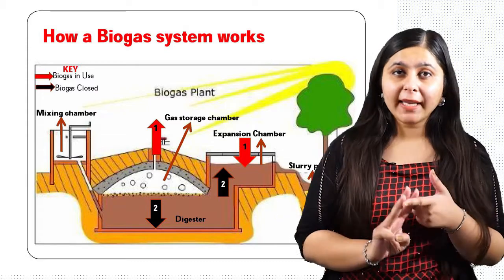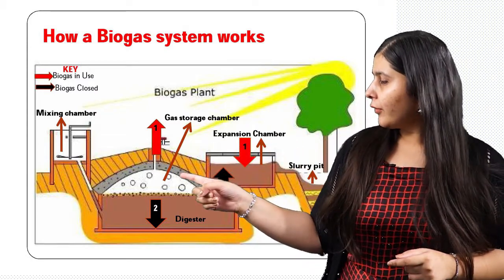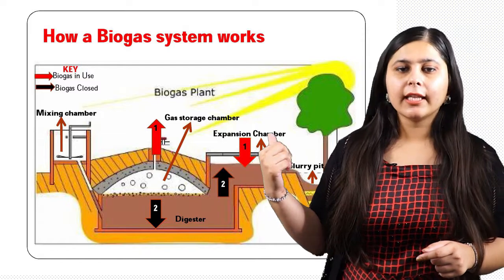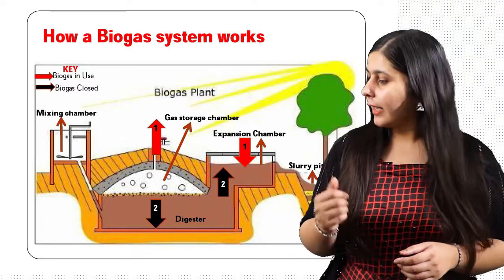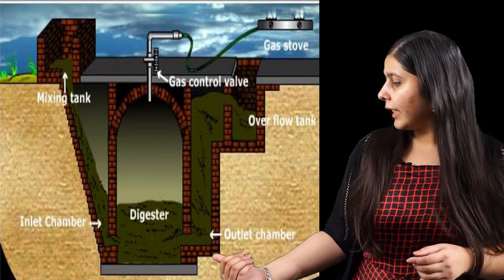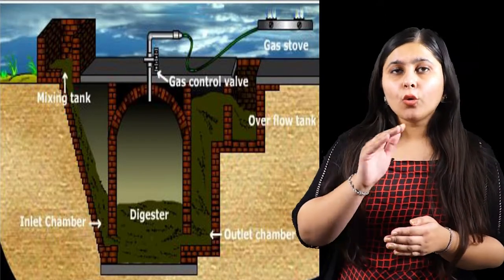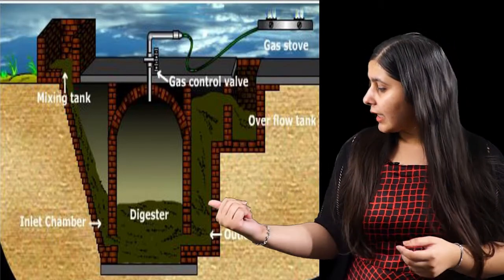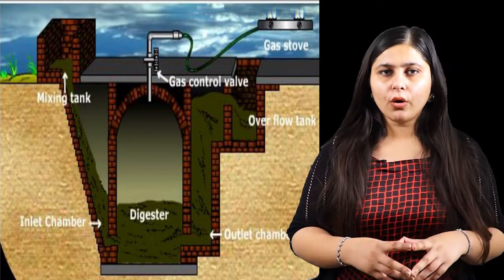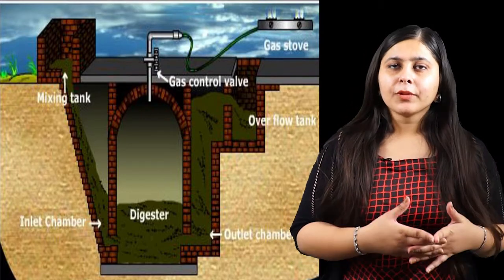Now we will study how biogas is obtained from biomass. There is a biogas plant which mainly has three tanks: the first is the mixing tank, the second is the digester tank, and the third is the overflow tank. Inlet pipes are attached from the inlet tank to the digester tank. This type of plant is known as a dome-shaped biogas plant because it has a dome shape over the digester tank, which is used to store the biogas formed.